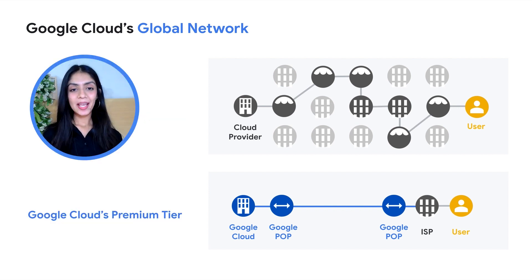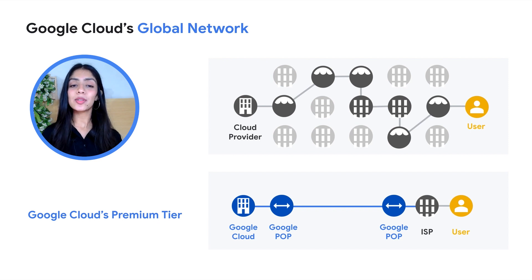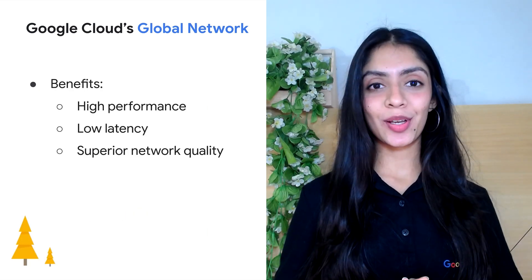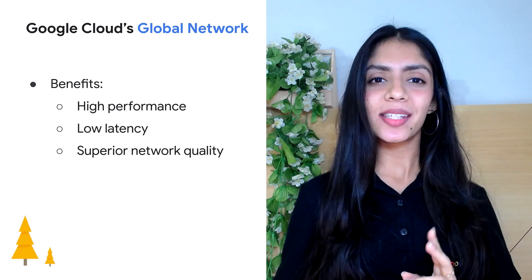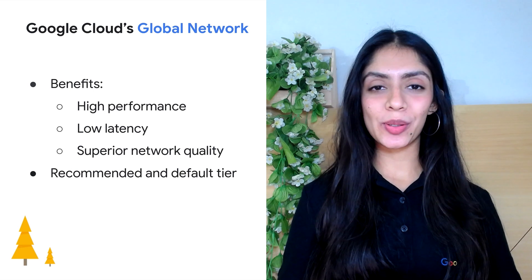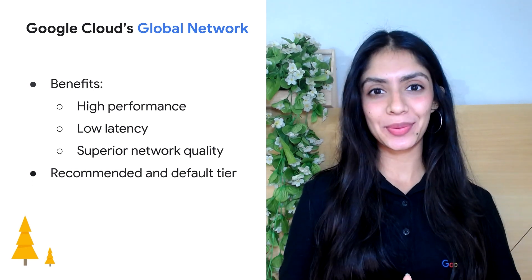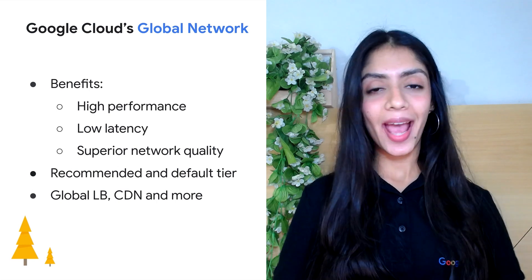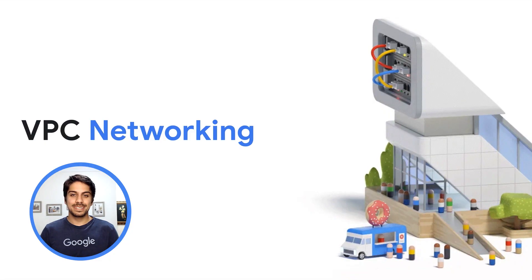In Google Cloud's premium networking tier we use cold potato routing, where we keep traffic on Google Cloud's private network for as long as possible and exit it to the public internet at the location closest to the end user — usually in the same town or city. This enables better reliability, better performance, and more security. The premium tier is the recommended and default tier, as it delivers traffic over Google's global backbone network, enabling features like global load balancing, CDN, and more.